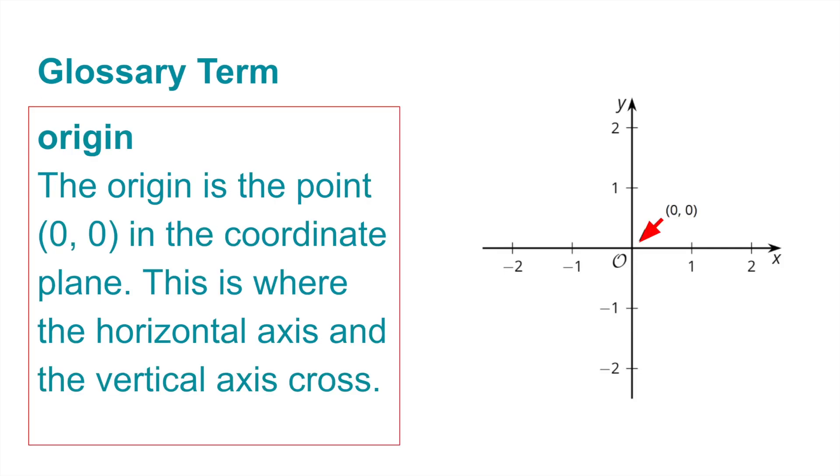Glossary term: origin. The origin is the point (0, 0) in the coordinate plane. This is where the horizontal axis and the vertical axis cross.